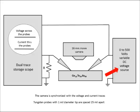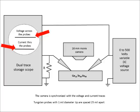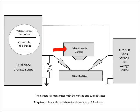This is a variable DC voltage source that can be manually controlled. On the left is a dual trace storage scope. The upper trace monitors the voltage across the probes and the lower trace measures the current through the probes. The 16 millimeter movie camera observes the phase change on the surface of the chicaginite, and the video is synchronized with the voltage and current traces of the probes.